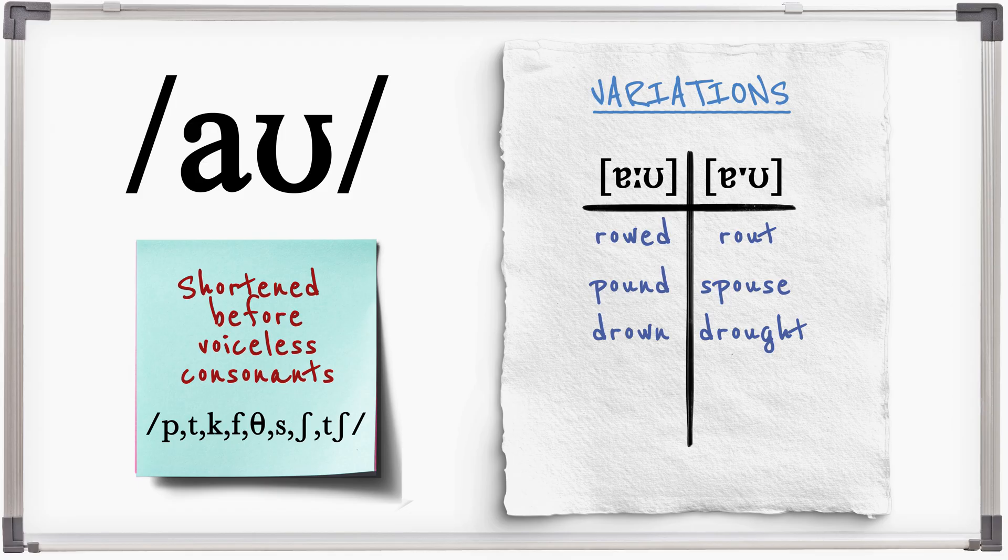A couple of words end in voiced and voiceless pairs with the same spelling. In these examples the noun is voiceless and therefore shortened.